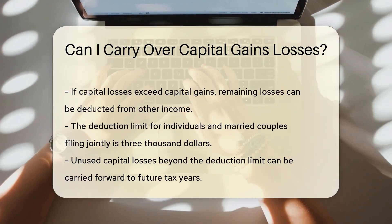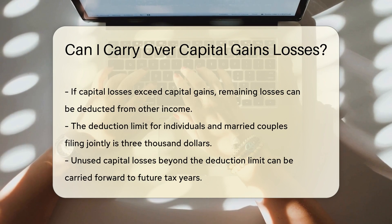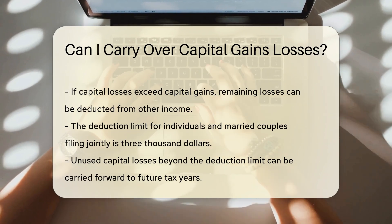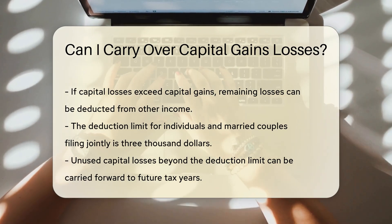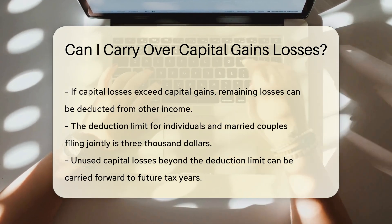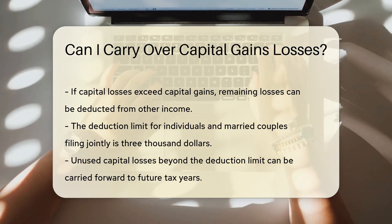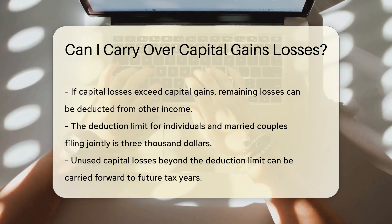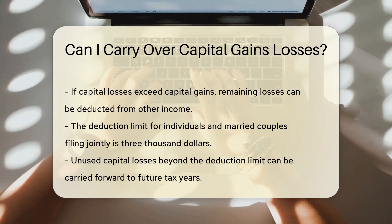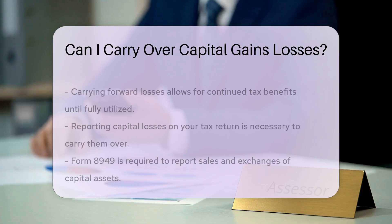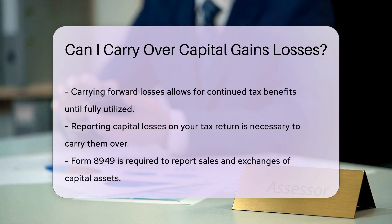This limit is set at $3,000 for individuals and married couples filing jointly. If your total capital losses surpass this limit, you can carry forward the unused losses to future tax years. This allows you to continue benefiting from your losses until they are fully utilized.